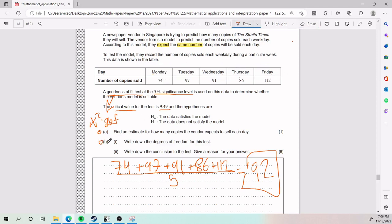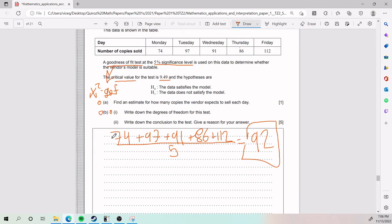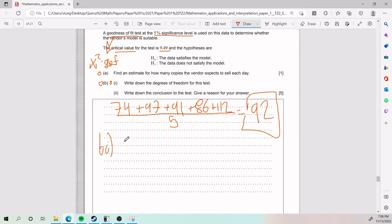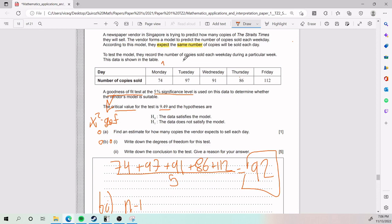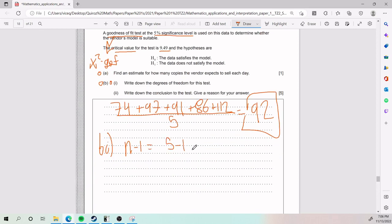For part B, part i, we have to write down the degrees of freedom for this test. Degrees of freedom is one of the things you kind of have to memorize. It's not in the formula booklet. But the formula in this case, because it's a single variable, is simply n minus 1 with n being the amount of columns that we're dealing with. How many columns do we have? We have 1, 2, 3, 4, 5. n minus 1, 5 minus 1. That means our degrees of freedom is going to be 4. That is part B, part i.